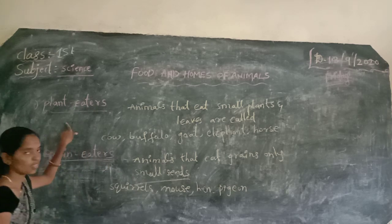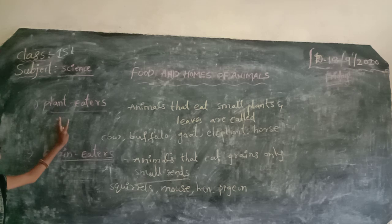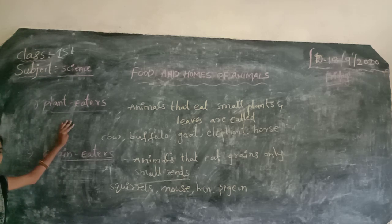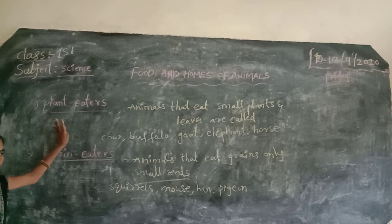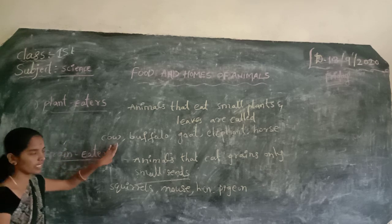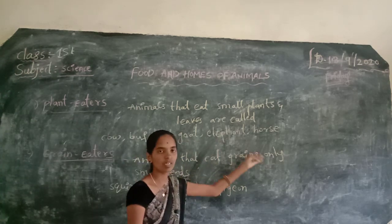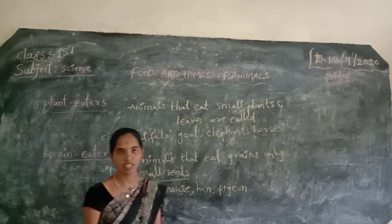So, first one is plant eaters, next grain eaters. Plant eaters eat only plants and leaves. For example, cow, buffalo, goat, elephant, horse, etc.